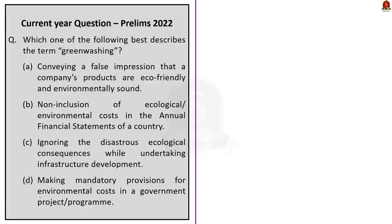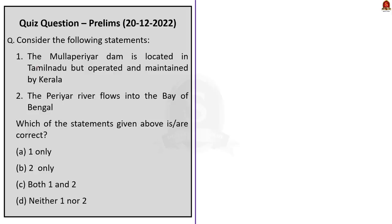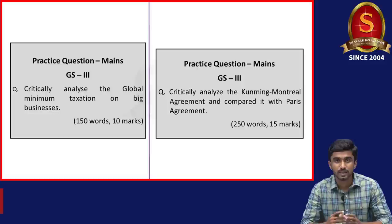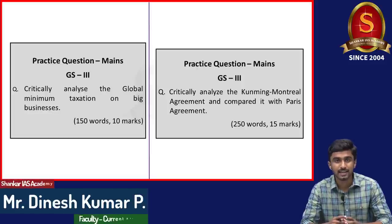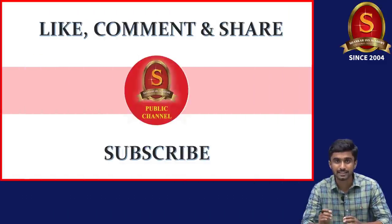The last question is a previous year question: which one of the following best describes the term greenwashing? The correct answer is option A: greenwashing is the process of conveying a false impression or providing misleading information about how a company's products are more environmentally sound. Greenwashing is generally done by multinational companies to make an impression that their products are sustainable in nature. A quiz question is also displayed for interested aspirants to post the right answer in the comment section. If you liked our video, please hit the like button, comment and share it with your friends. Thank you for listening.